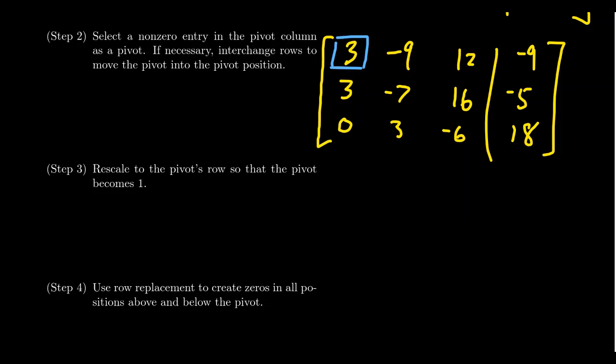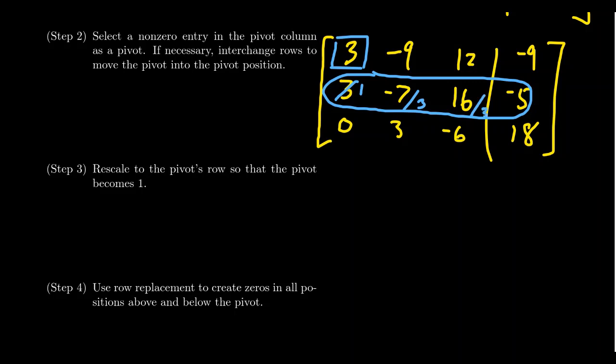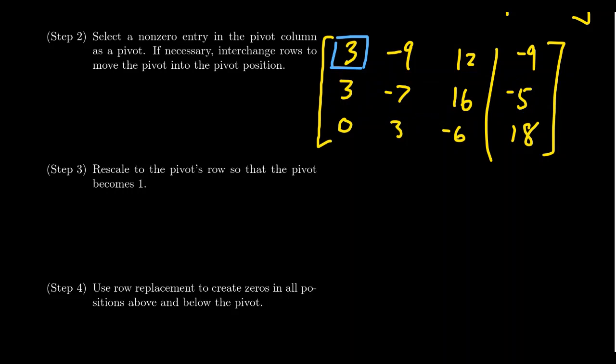Now, with the pivot position, it's really nice if you have a one there. The proper Gauss-Jordan elimination technique would actually postpone this step until later. But if we can get a one without introducing fractions, that's ideal. For instance, if we had interchanged rows one and two instead, dividing by 3 to get a one would give us -7/3, 16/3, and -5/3 — fractions are a nightmare for most college algebra students, and so dividing just to get a one isn't necessarily the best thing to do.